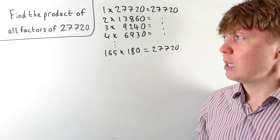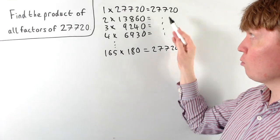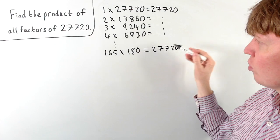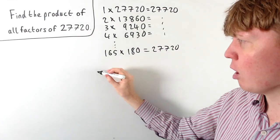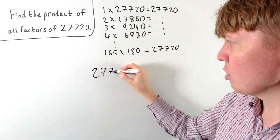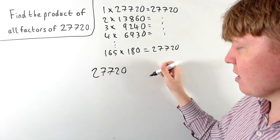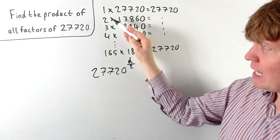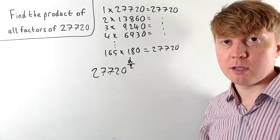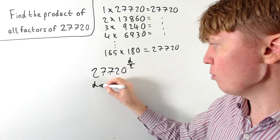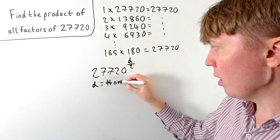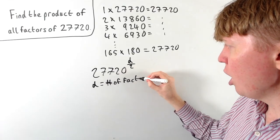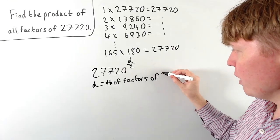So our answer to this problem then would be, the product of all of these factors would be 27,720 raised to a certain power. So we could write our answer as 27,720 raised to the power of d divided by 2, where d is going to be the total number of factors, or the total number of divisors. So d is the number of factors of our original number.